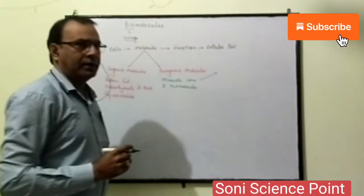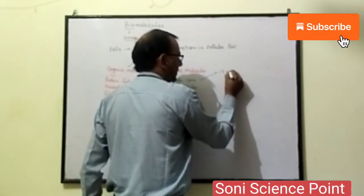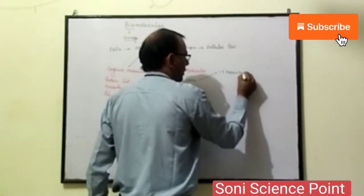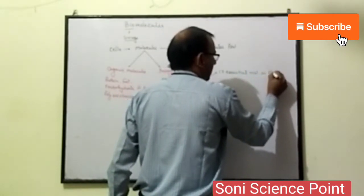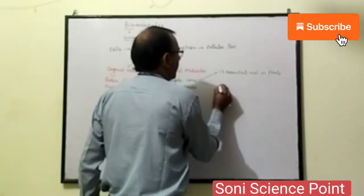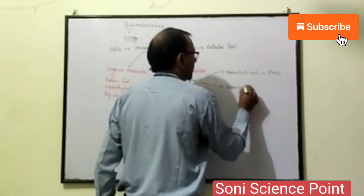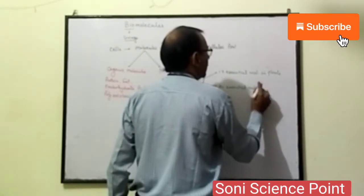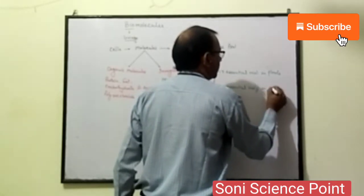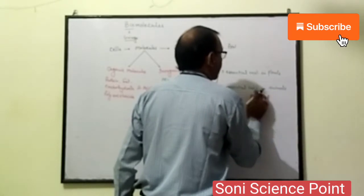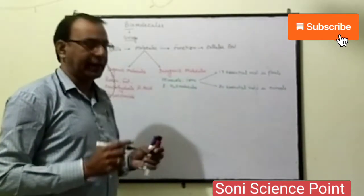Regarding inorganic molecules in plants, there are 17 essential inorganic molecules required by plants. In animals, there are 24 essential molecules. So we can categorize the different types of inorganic molecules which are required by plants as well as animals.